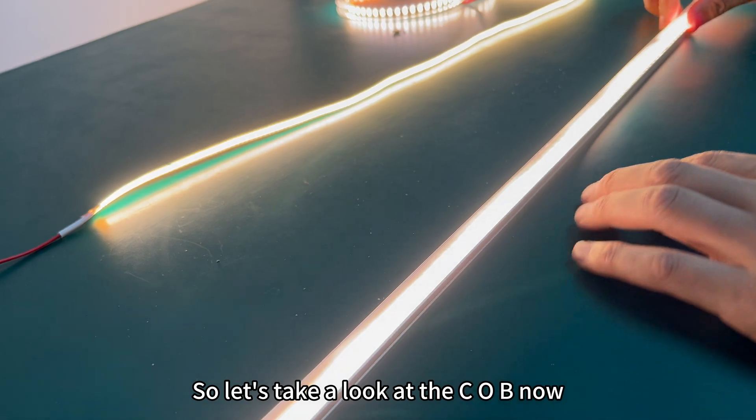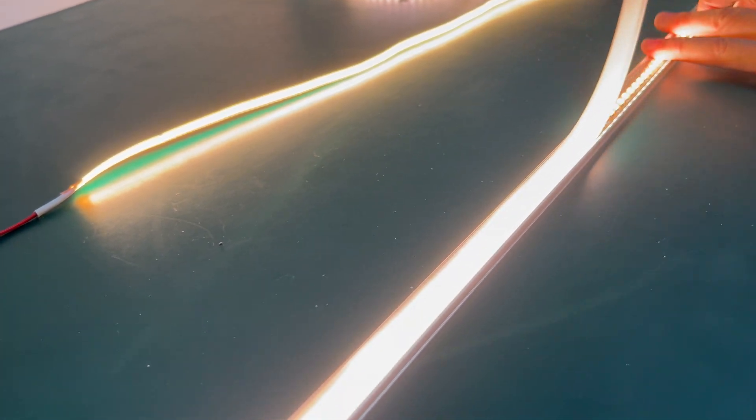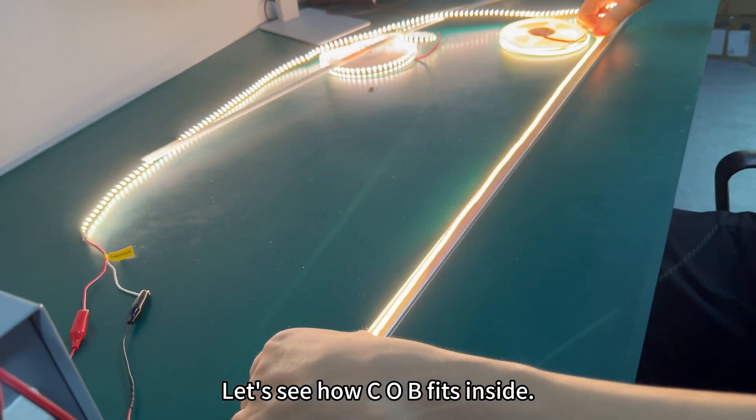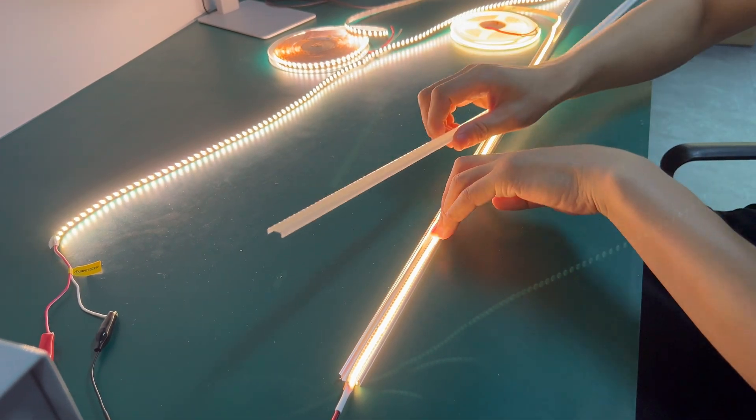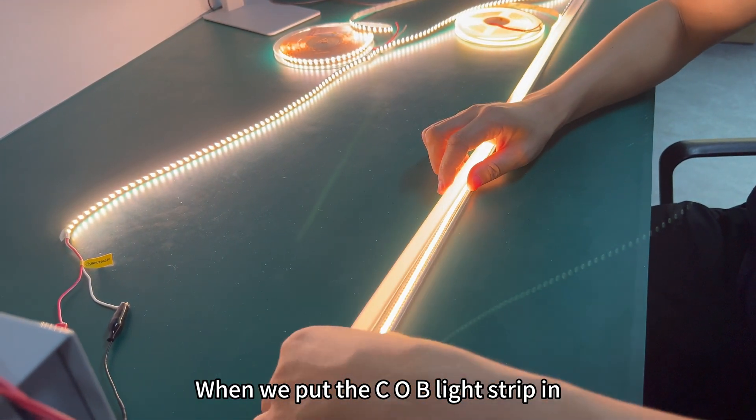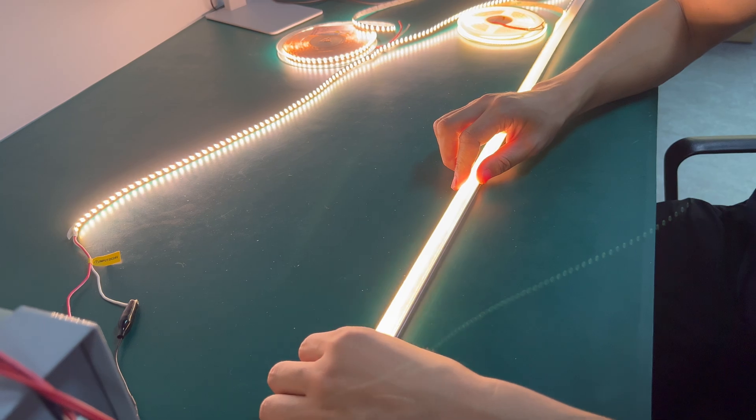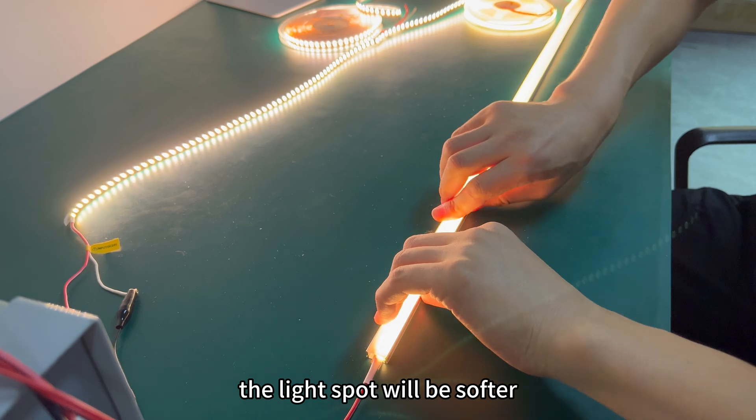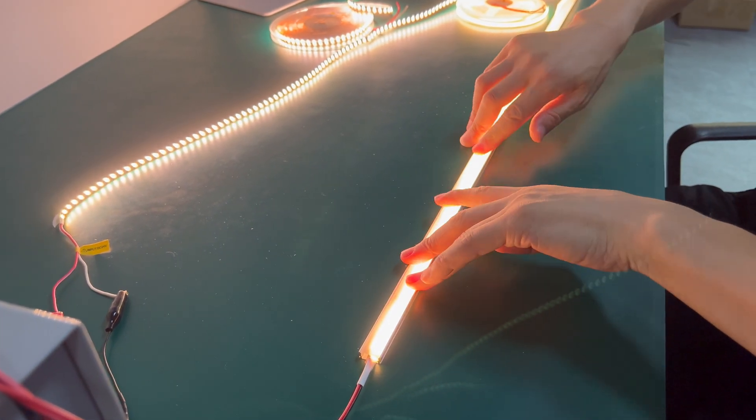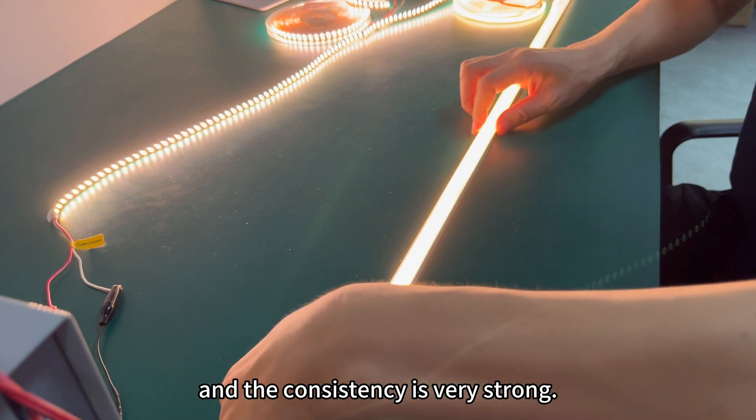So let's take a look at the COB now. Let's see how COB fits inside. When we put the COB light strip in, we can see the light spot will be softer and the consistency is very strong.